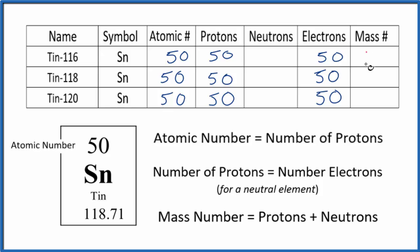Tin-116. Mass number is 116. Tin-118, and so on. Now we know that the mass number equals the protons plus the neutrons. We know the mass number. We know the protons. We can figure out the neutrons. So 50 plus some number gives us 116. 50 plus 66, that would give us 116.